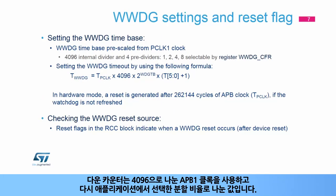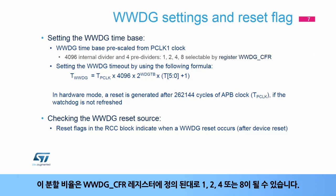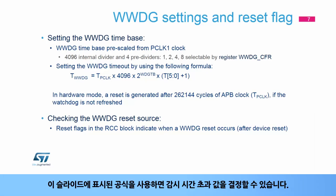The down counter uses the APB1 clock divided by 4096 and again divided by a division ratio selected by the application. This division ratio can be 1, 2, 4, or 8 as defined in the WWDG CFR register. The formula shown in this slide lets you determine the watchdog timeout value.